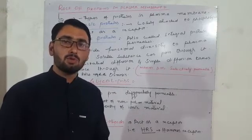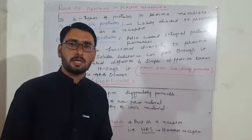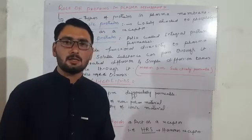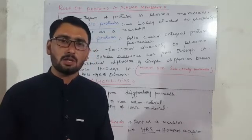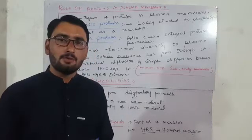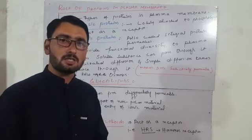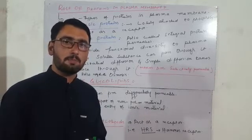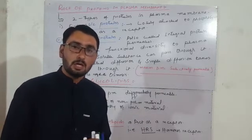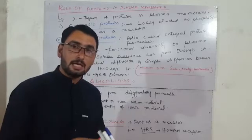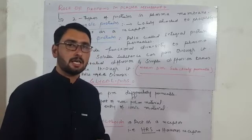The most acceptable model of the plasma membrane is the Singer and Nicholson model, also known as the fluid mosaic model. In this model we discuss the role of proteins and lipids in the plasma membrane.